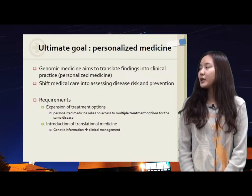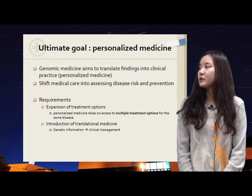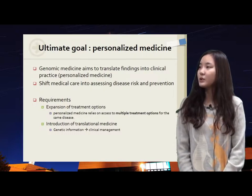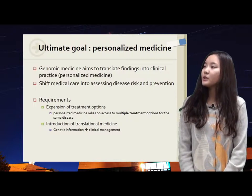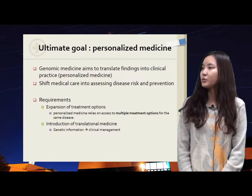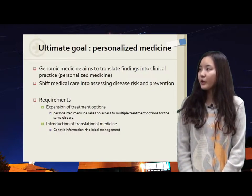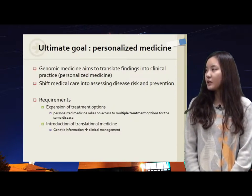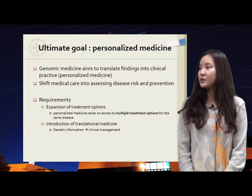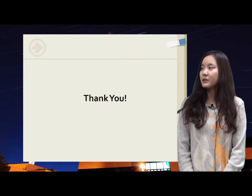Personalized medicine, which can involve genome information and family history, shifts medical care toward assessing disease risk and prevention. To make personalized medicine possible, expansion of treatment options is needed because personalized medicine depends on access to multiple treatment options for the same disease. The other requirement is introduction of translational medicine — translation of increasing genetic information into improvements in clinical management. This is the end of my presentation. Thank you.